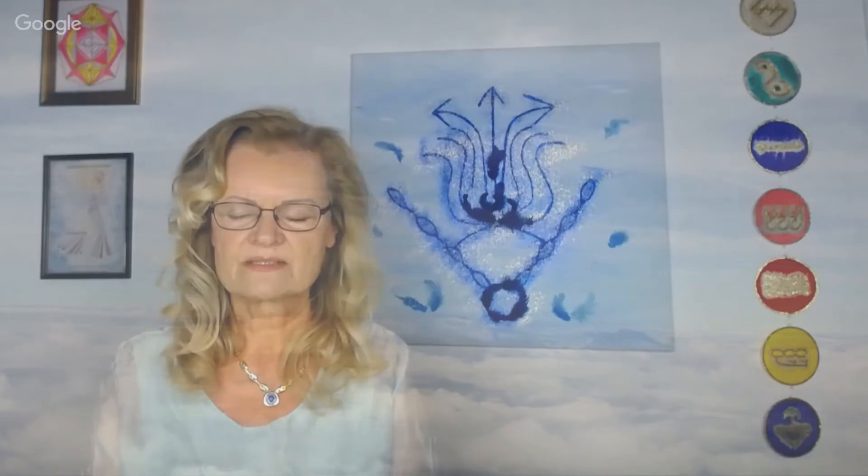Und wenn du nun etwas auf dem Herzen hast, wo du meinst, dass du Unterstützung brauchst, dann sage es jetzt deinem inneren Architekten. Er wird die Stelle in deiner Matrix finden, die er reparieren kann, welche er gerne für dich so konstruiert, dass du neue Impulse bekommst, dass sich das auflösen kann, was dich jetzt gerade hindert, voranzukommen. So spreche nun zu deinem inneren Architekten, was dir am Herzen liegt. Ich gebe dir ein wenig Zeit dafür.